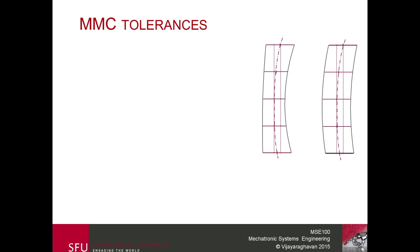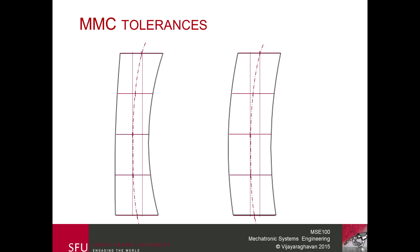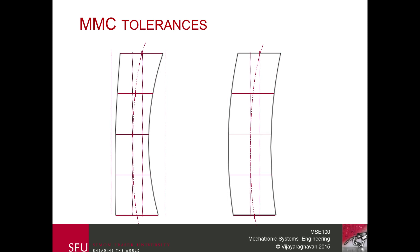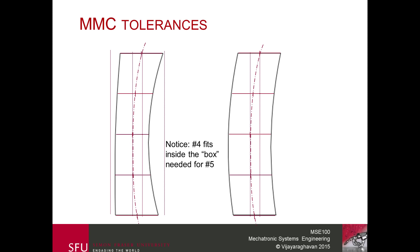Now let's look at why we typically enforce the geometric tolerance at the maximum material condition. We'll examine the last two cases as the worst-case scenario and try to find a bounding cylinder that completely encloses both parts. Notice that number four — the one on the left — completely fits inside the bounding box needed to fit number five.